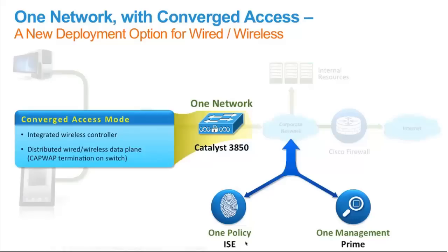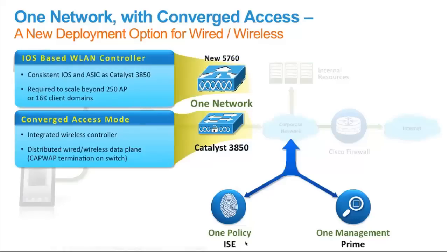Catalyst 3850 has certain constraints on the number of access points that can be terminated on it. For higher requirements, there's a new WLAN controller, the 5760, which has the same hardware and IOS XE as the 3850. With the 5760 WLAN controller, you can scale beyond 250 access points or 16,000 clients within a mobility domain. The beauty of the 5760 is it has exactly the same internal hardware in terms of ASICs and CPU. The IOS commands are exactly the same as 3850 — this controller is no longer running AireOS, it runs IOS XE.